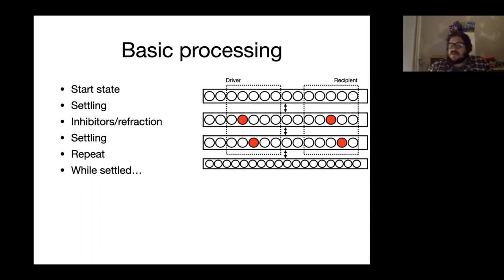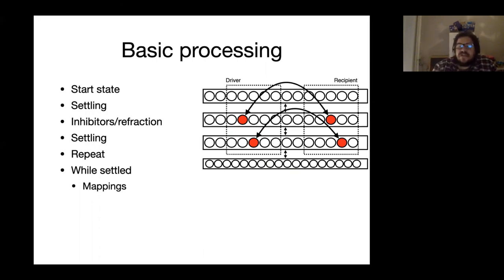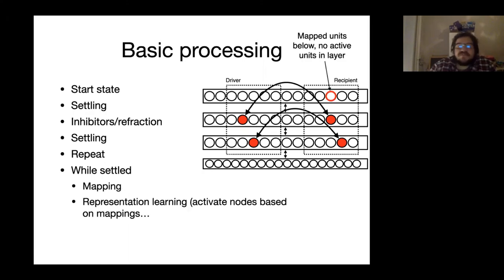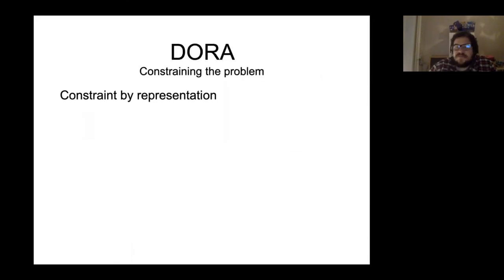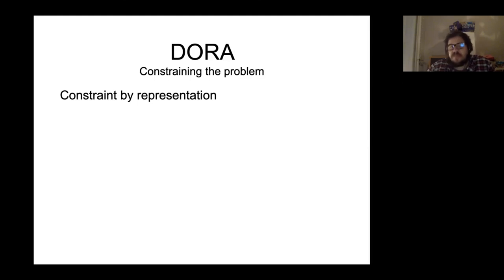When the system is settled, it learns mapping connections — excitatory connections between co-active units in the same layer across driver and recipient. It also engages in representation learning: it activates nodes in layers of the network where none are active based on current mappings, then updates connections between nodes in all layers based on simple Hebbian learning — co-active weights go up, de-co-active weights go down.